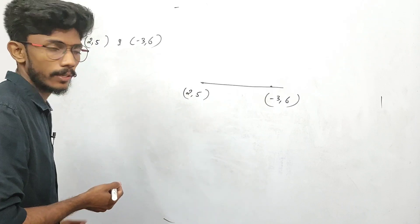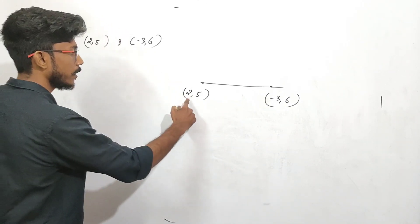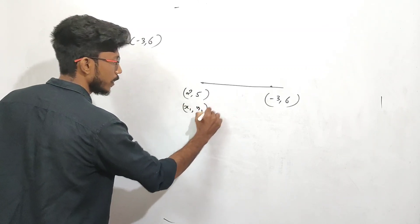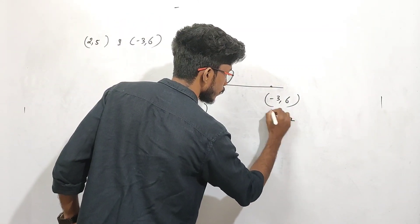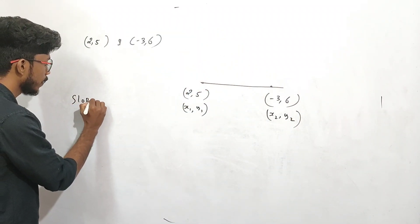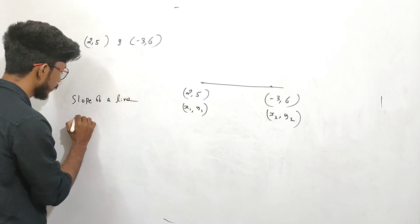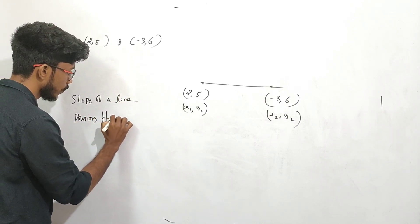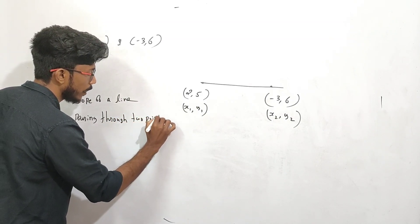Okay, this is the slope formula. We label the first point as (x1, y1) and the second point as (x2, y2). The slope of the line passing through 2 points is given by the formula.